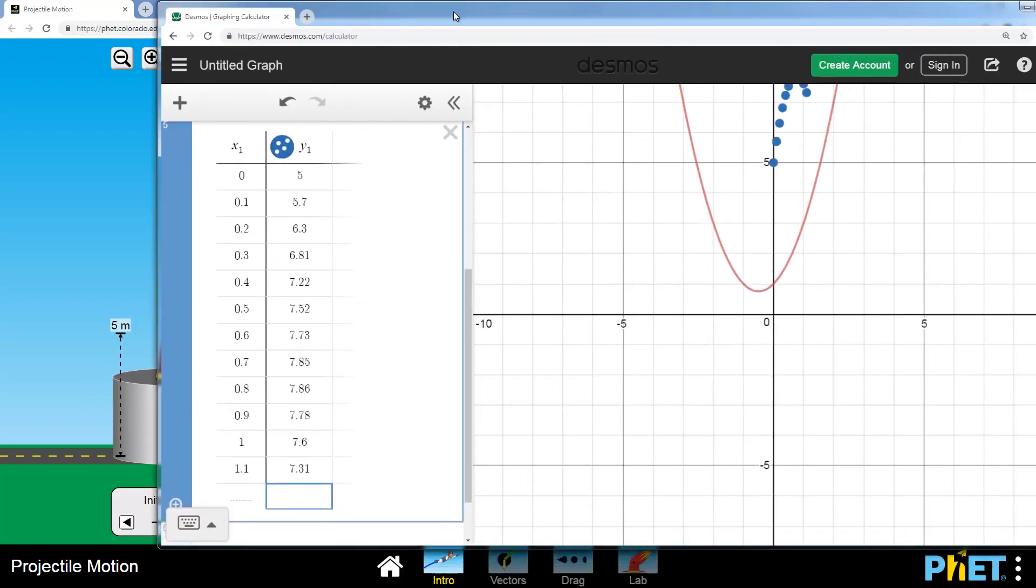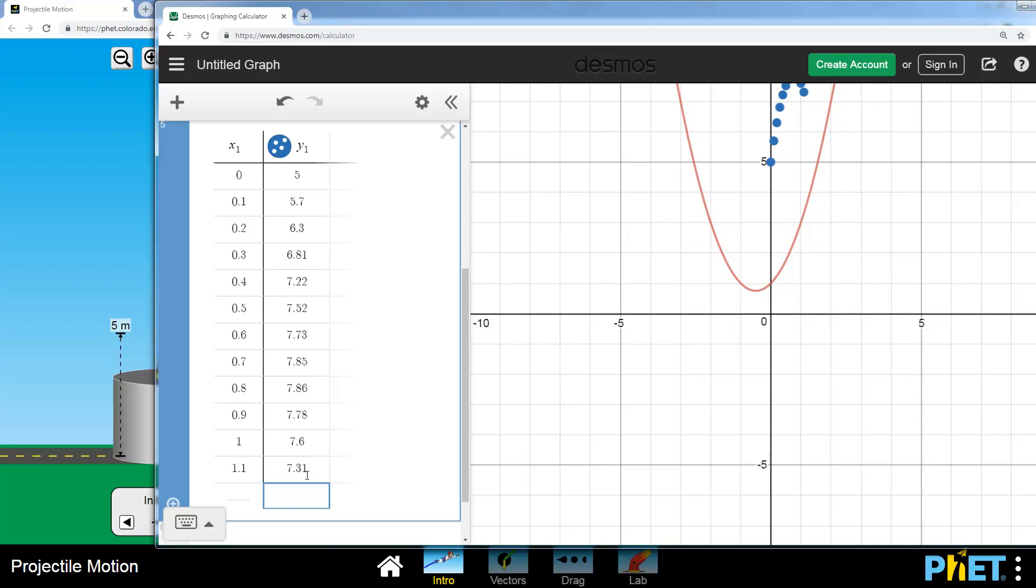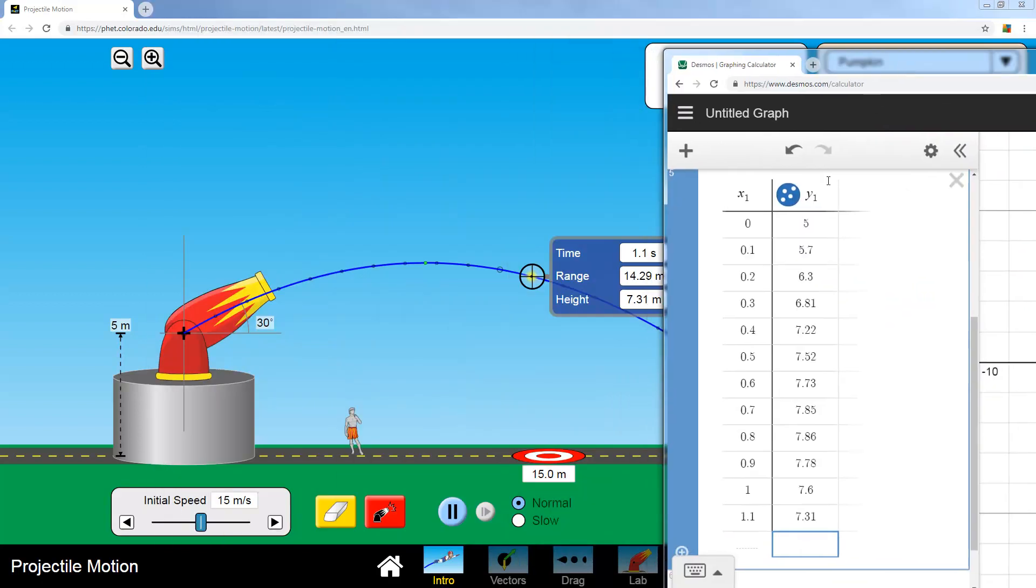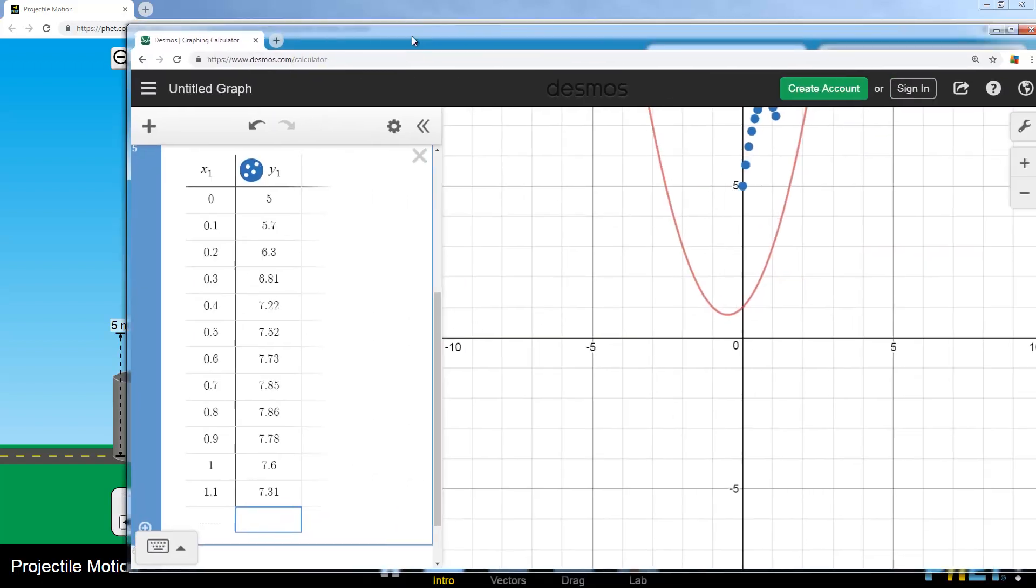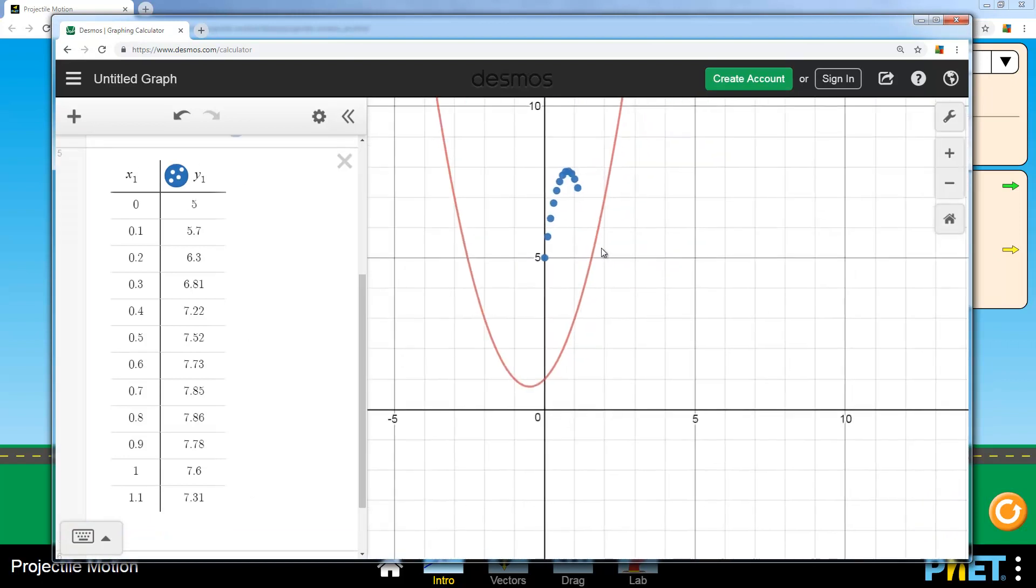So I've entered the first, just over a second. I've gone up to 7.31, the last one I did here at 1.1 seconds. So I've gone a little bit past the highest point of the parabola. And you can see the curve starting here. Now it looks nothing like my quadratic function here.